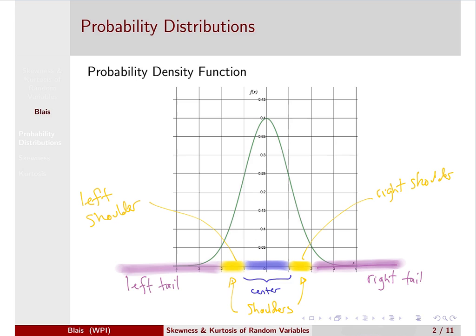But some distributions may have more weight, more probability mass out in these tails. That's going to be one of the main topics of this lecture, but we need this terminology for center of the distribution, left shoulder, right shoulder, and then left tail and right tail.